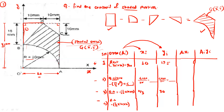For the second right angle triangle, xi is 20 minus 10 by 3. Now find out the products Ai*xi and Ai*yi for each geometry: rectangle, quarter circle, right angle triangle, and right angle triangle.